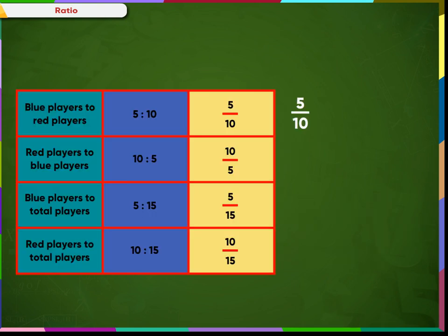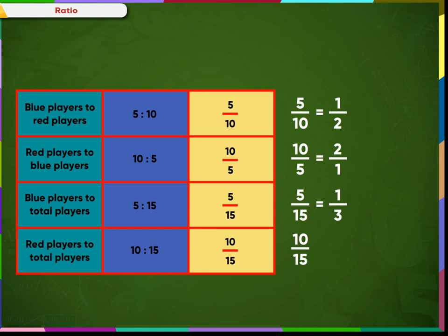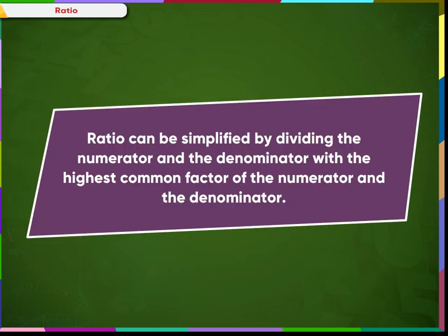The ratio 5 is to 10 can be simplified by dividing the numerator and denominator by 5, which gives us 1 upon 2. Similarly, we can simplify 10 is to 5 as 2 by 1. The ratio 5 is to 15 simplifies to 1 by 3, and the simplest form of 10 is to 15 is 2 by 3. Thus, a ratio can be brought to its simplest form by dividing by the highest common factor of the numerator and the denominator.